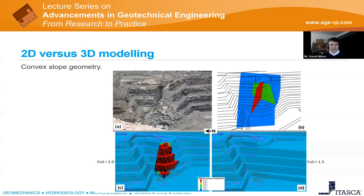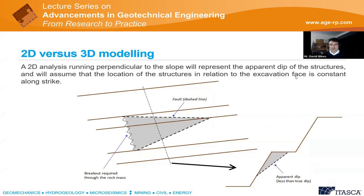Another issue with 2D analyses is that they assume everything at the section location is consistent along the slope. Where you have a structure that's oblique to the slope, you might require some breakout through the rock mass on one side, whereas in 2D the failure can simply come out along that structure without that requirement.